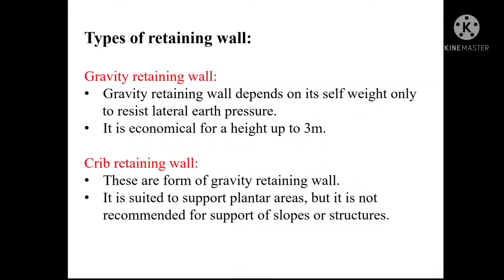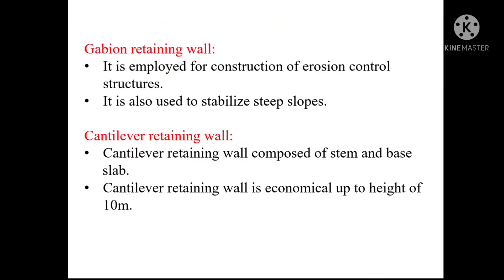Gabion retaining walls are multi-cellular rectangular wire mesh boxes which are filled with rocks and/or other suitable materials. They are employed for construction of erosion control structures and are also used to stabilize steep slopes.